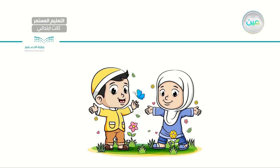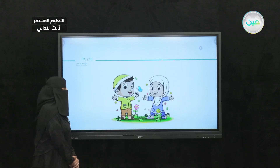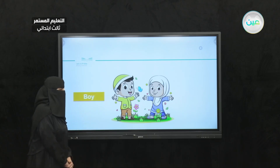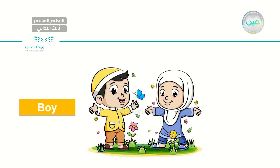Let me introduce some individual opposites. Here I have a boy — can you guess the opposite of boy? The opposite is a girl. So I have a boy and a girl. Let's read together: a boy. The opposite is a girl. Very good.